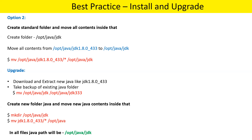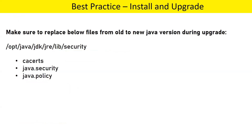The difference between option one and option two: both use the same standard path /opt/java/jdk, so configuration files and scripts don't need updating. In option one, jdk is a symbolic link pointing to the versioned Java folder. In option two, jdk is a real folder and you move the contents of the new Java installation into it. Option two upgrade just requires extracting the new folder and copying contents into jdk, while option one requires dropping the old link and creating a new one.